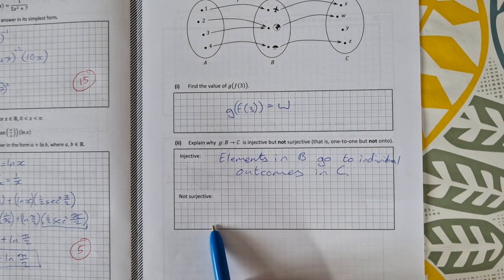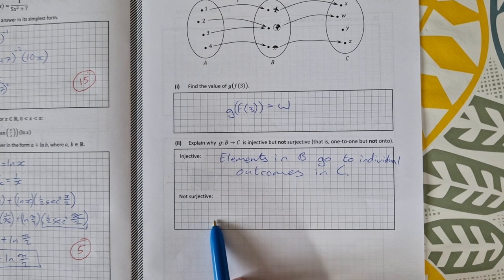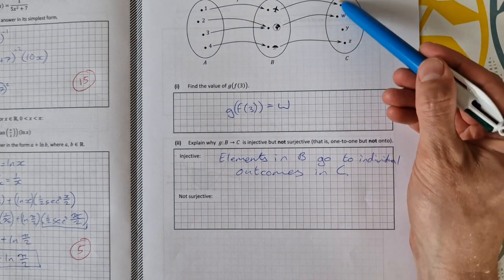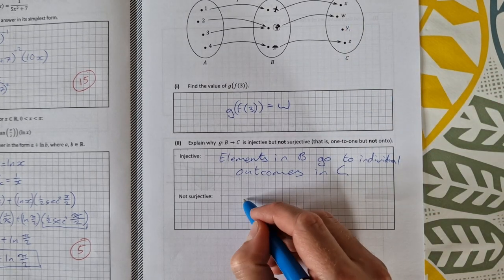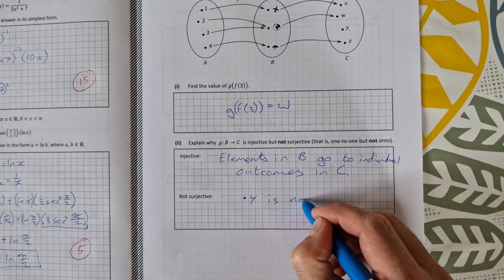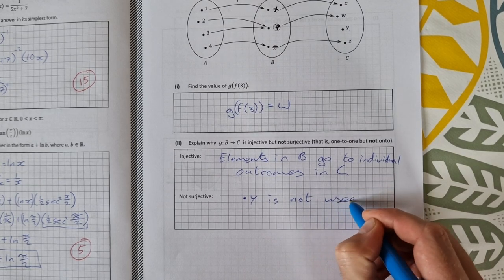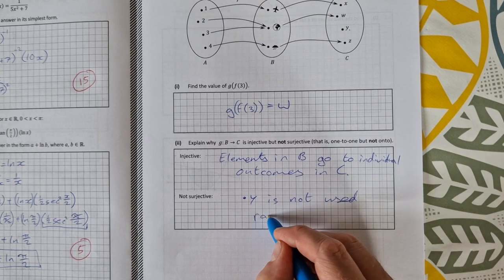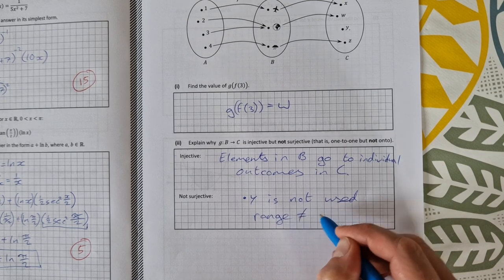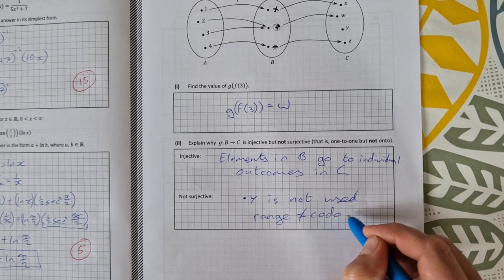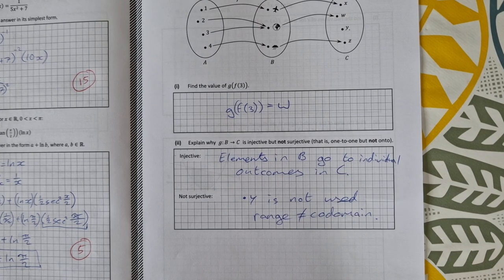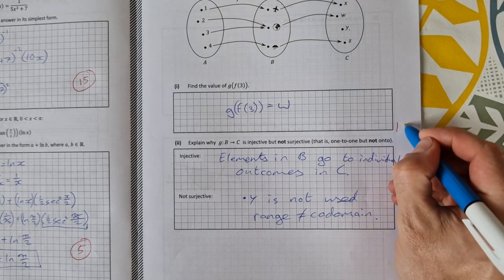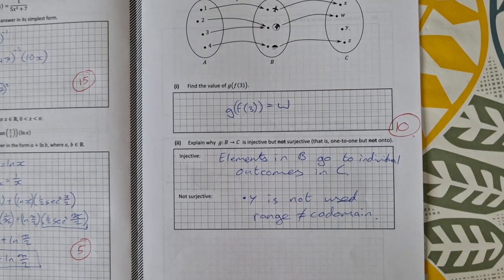And then why is it not surjective? Well it's not surjective because the whole codomain is not used. You can see that y is not used. So we can just say y is not used. Or you could say that the range is not equal to the codomain. So that question there part C again was probably a very generous 10 marks out of the 30 for that one.